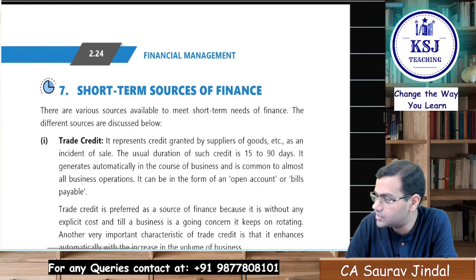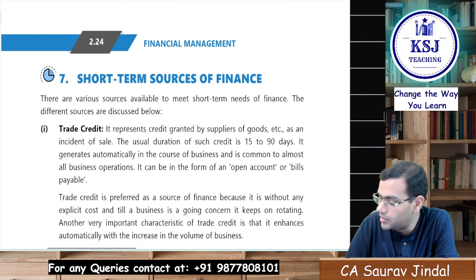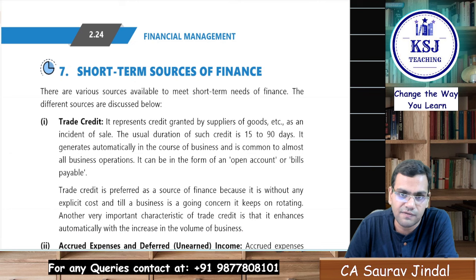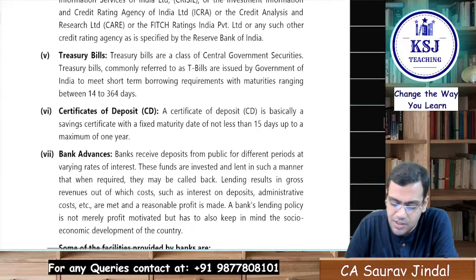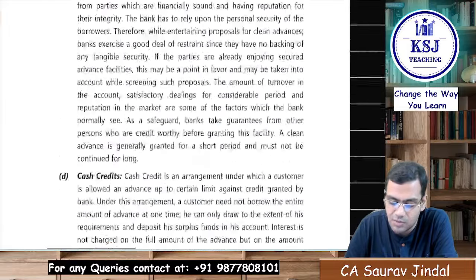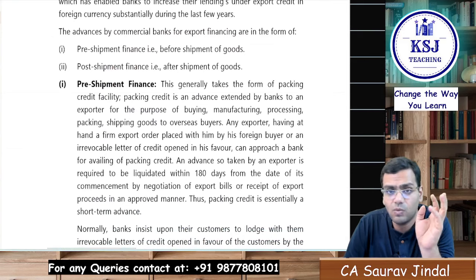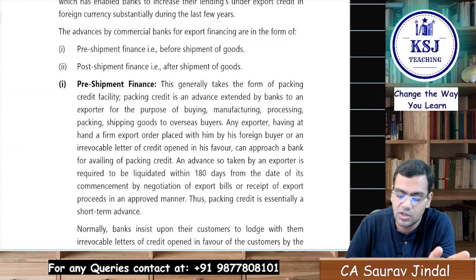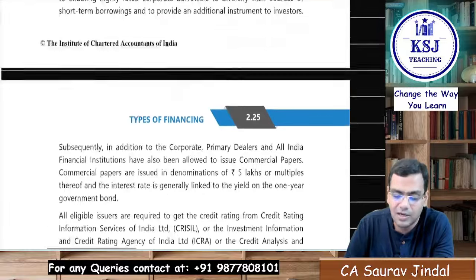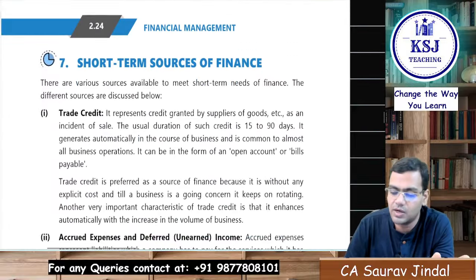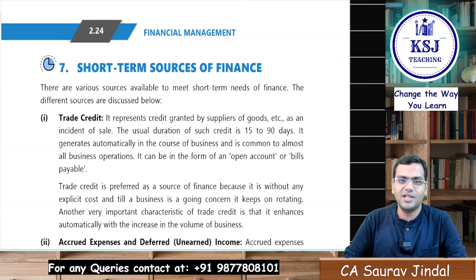We are done with this topic. In the next video we'll cover the short-term sources of finance, which include trade credit, accrued expenses, deferred income, advances from customers, commercial papers, treasury bills, certificate of deposit, bank advances, short-term loans, overdraft, cash credit, advances against goods, bills purchased/discounted, and financing of export trade by banks. I'll give explanations and you can do the reading part on your own. See you in the next video — stay safe, stay healthy, keep studying, and keep sharing!